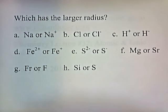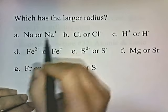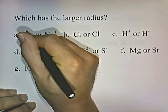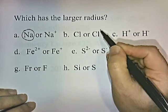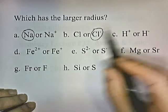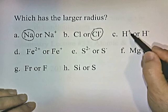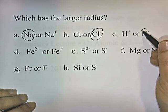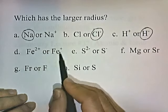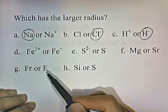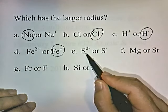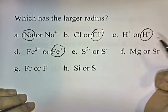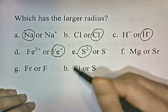Now let's see if we can figure out which one has the larger radius by checking chart position and charge. Sodium or sodium-plus? If it has a positive charge, it has a smaller radius, so neutral sodium has the larger radius. Chlorine or chlorine-minus? Chlorine-minus has a negative charge, giving it a larger radius. Hydrogen-plus or hydrogen-minus? The plus charge makes it smaller and the negative charge makes it bigger, so hydrogen-minus has the larger radius. Iron-two-plus or iron-plus? The more positive the charge, the smaller the radius — iron-plus has the larger radius. Sulfur with a negative-two charge or sulfur with a negative-one charge? The more negative the charge, the larger the radius — sulfur with a negative-two charge is larger.